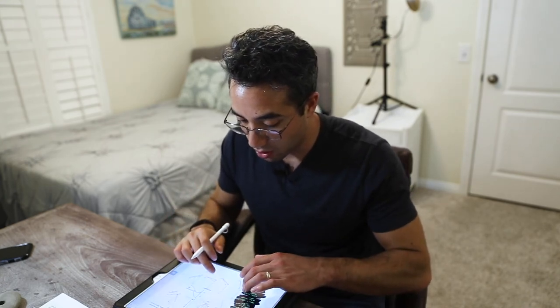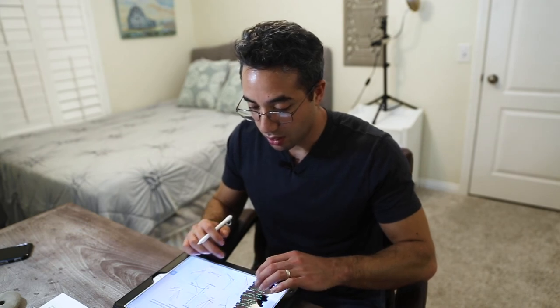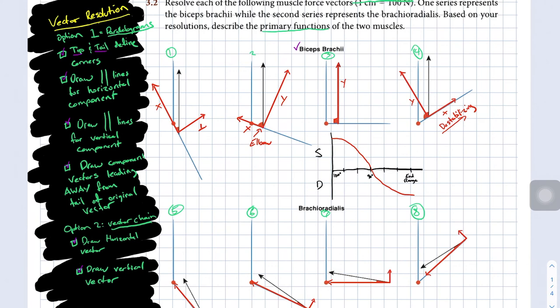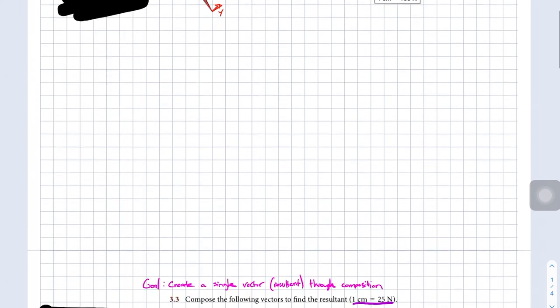That is how we can use vector resolution, either the parallelogram or the vector chain method, to solve biomechanical problems. If you want to learn how to do vector composition next, go ahead and head on over to this video that will appear on this side of my head. If you had any questions or comments, leave them in the comments below. I'd love to answer them and connect with you. Don't forget to like and subscribe. I'll see you over in the next video.